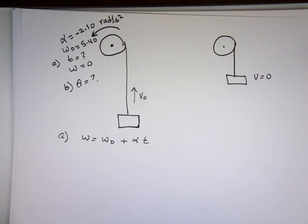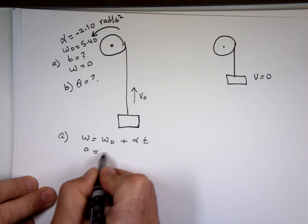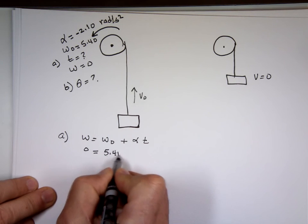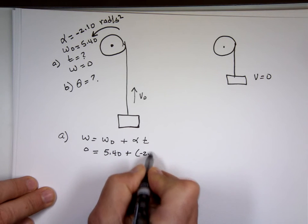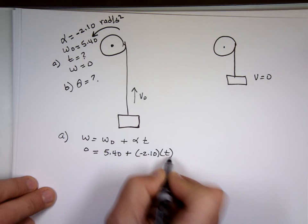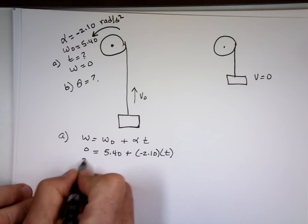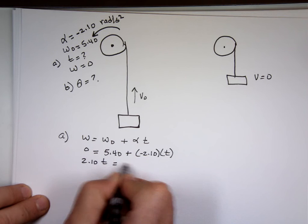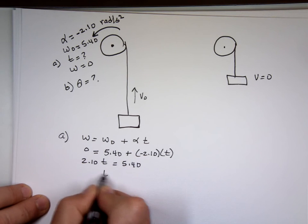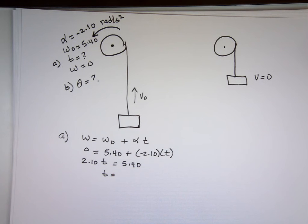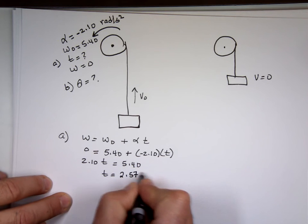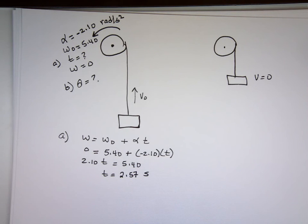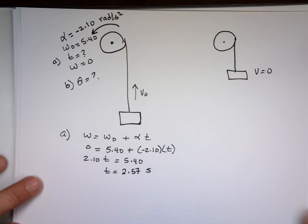W is zero, what's w 0? 5.40. Alpha is negative 2.10 times t. 2.10 t equals 5.4, and what's t equal to? 5.4 divided by 2.1, 2.57 seconds. And part B, can we find theta?